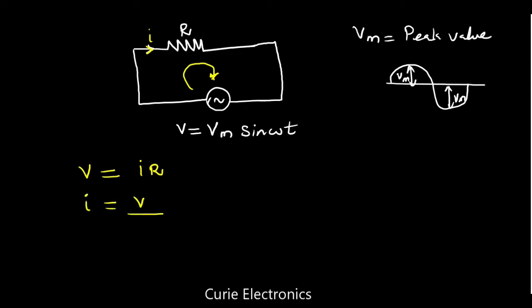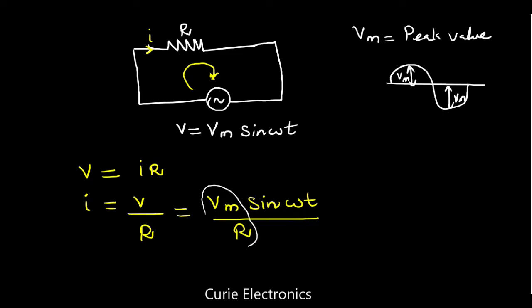From here, I want to find I. I equals V upon R. Since V is given as Vm sin(ωt), we get I = (Vm/R) sin(ωt). This Vm upon R is a constant and we can write it as Im, so I = Im sin(ωt).